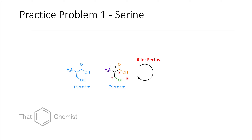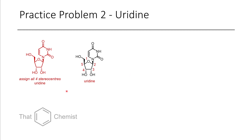So here we have our serine. In the next example, I asked you to assign all four stereocenters of uridine. The way these are typically numbered, we start with the oxygen of the tetrahydrofuran ring, beginning at the two position. Here, if we simplify it a little bit and stick the hydrogen in the back, we have oxygen, nitrogen, and carbon. Oxygen is larger than nitrogen, nitrogen is larger than carbon — this is a really straightforward one. We have a rectus.